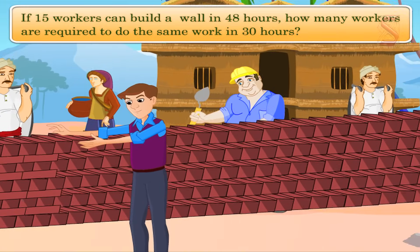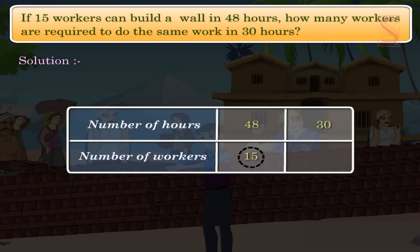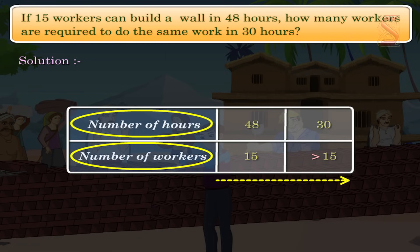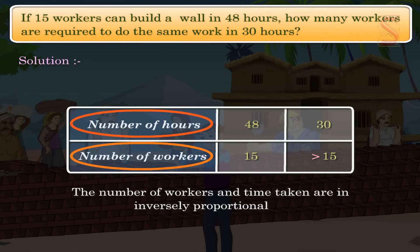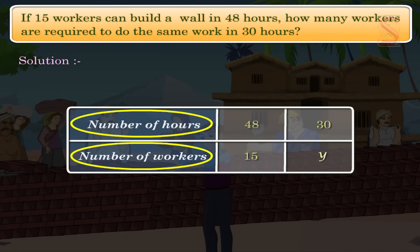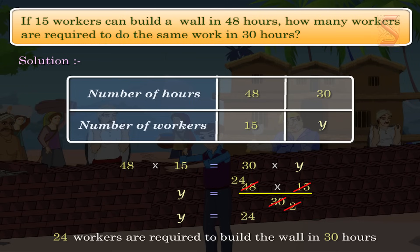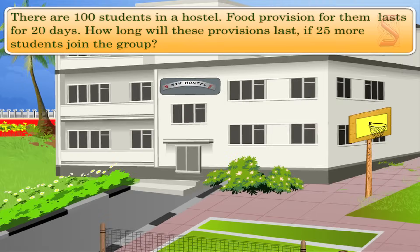If 15 workers can build a wall in 48 hours, how many workers are required to do the same work in 30 hours? To do the same work in less time there must be more workers, so the number of workers and time taken are inversely proportional. Let the required number of workers be y. Since they are in inverse proportion: 48 × 15 = 30 × y, so y = (48 × 15) / 30 = 24. Therefore, 24 workers are required to build the wall in 30 hours.